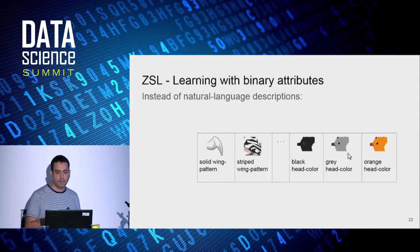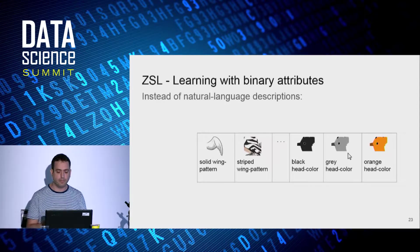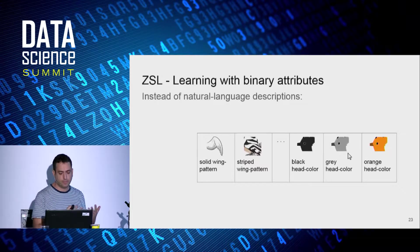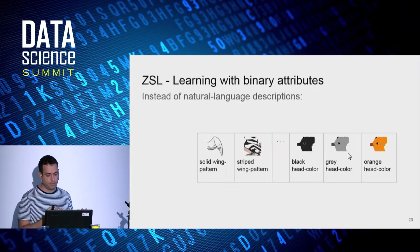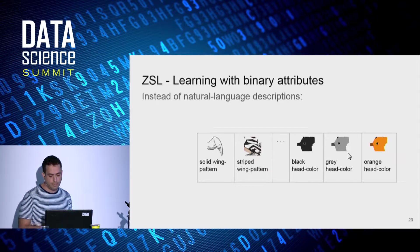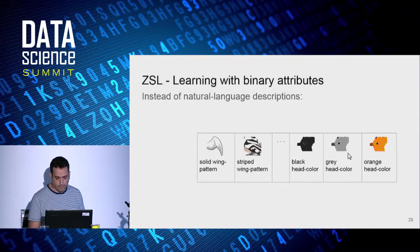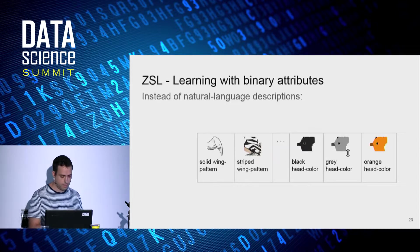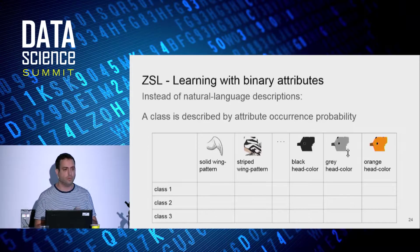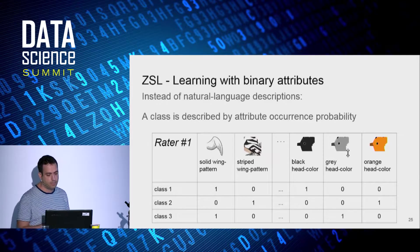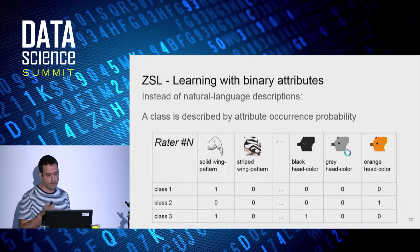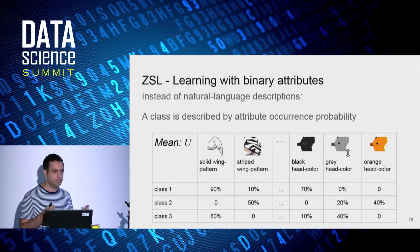Now, in our setup, instead of natural language description, we have a set of predefined binary attributes. For instance, in a dataset of bird species, the first attribute indicates whether or not a wing has a solid pattern in a class or in an image. The second attribute is about stripes. And the last attribute describes various colors of a bird head. A class is described by the attribute occurrence probability by averaging across raters. So here is rater number one, rater number two, etc. And the attribute occurrence probability is just the average.